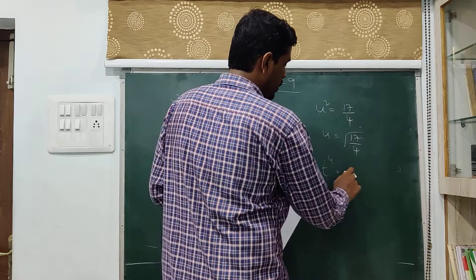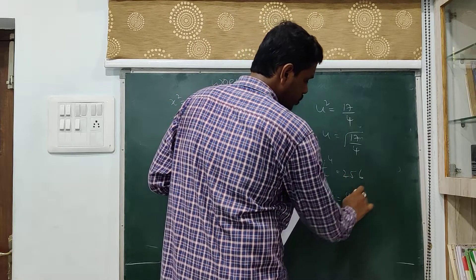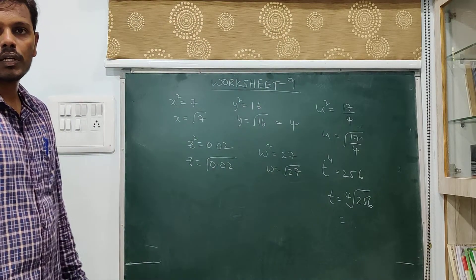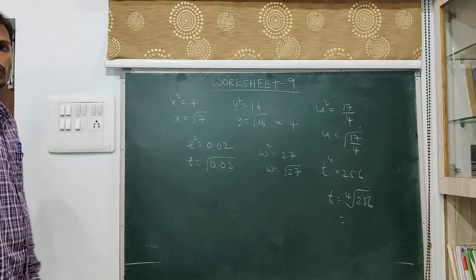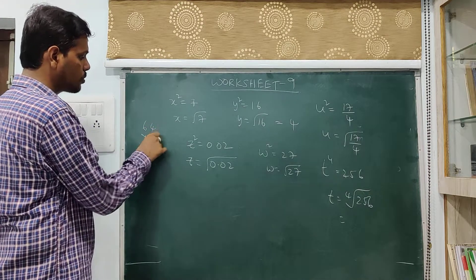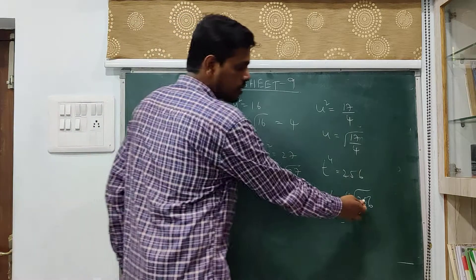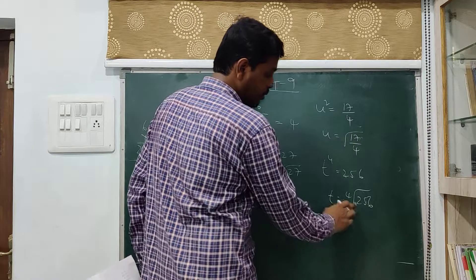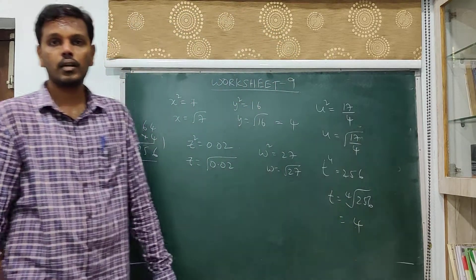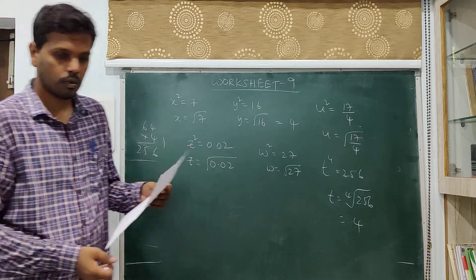Next: t to the power 4 is equal to 256. t is equal to the fourth root of 256. You can write 256 as 4 to the power 4, or equivalently 2 to the power 4. Therefore, the fourth root of 256 is 4. So, 4 is a rational number, and hence t is a rational number. That is it for that section.